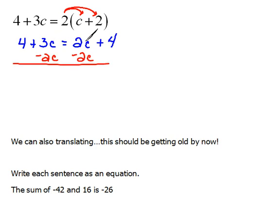Now, I need my c's to be together, so I'm going to move the smaller one by subtracting, or doing the opposite, which in this case is subtracting 2c from both sides to get 4 plus 3 minus 2c would be a positive c equals 4.